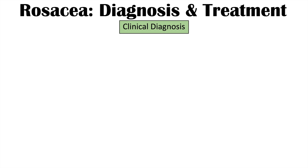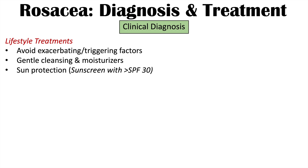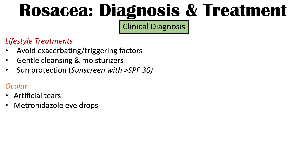The diagnosis of rosacea is typically a clinical diagnosis, based on history, physical examination, and the triggers discussed. Treatment is broken into categories: lifestyle modifications include avoiding exacerbating factors, gentle cleansing with moisturizers, and sun protection using sunscreen with at least SPF 30. For ocular rosacea, artificial tears and metronidazole eye drops can be helpful.